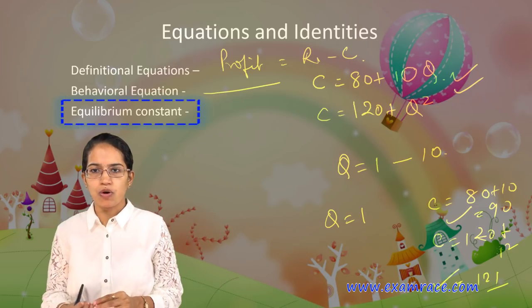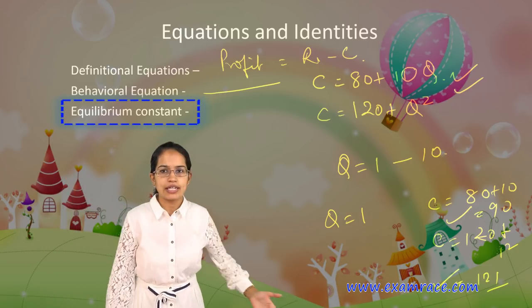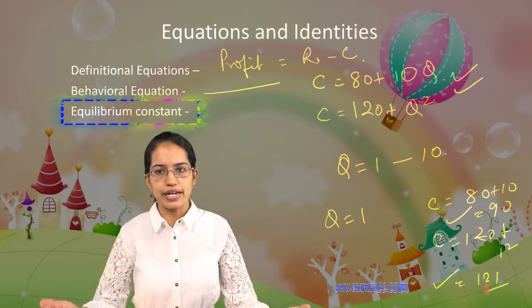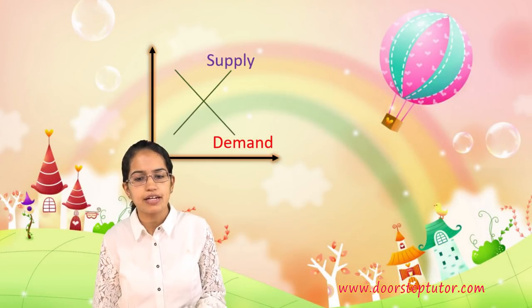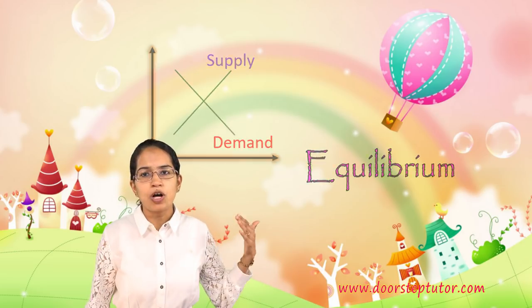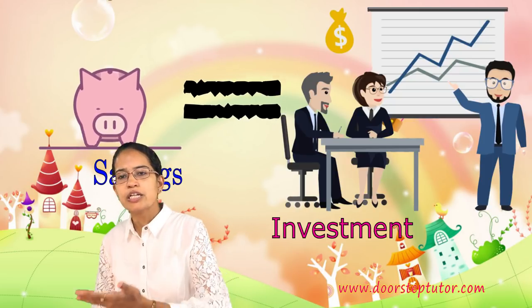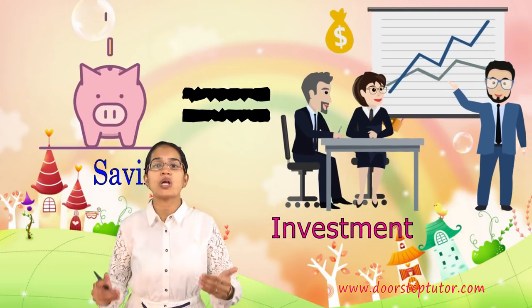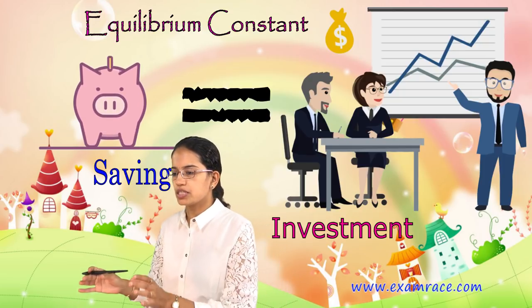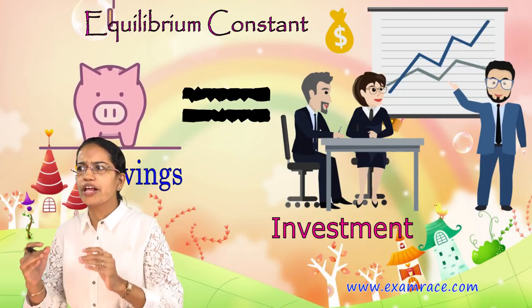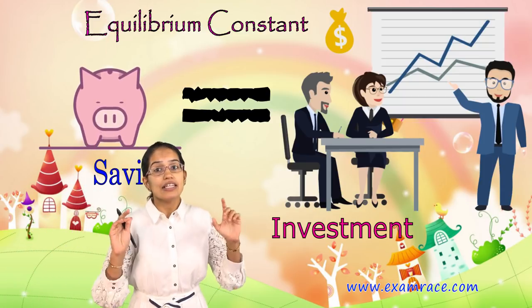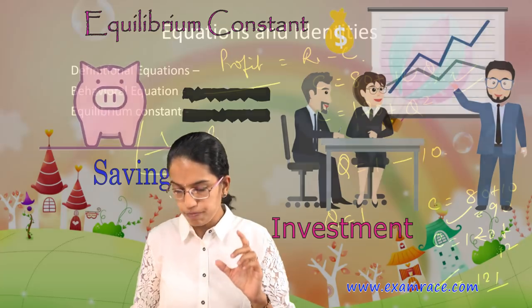The next type is the equilibrium condition. For example, quantity demanded equals quantity supplied — that is the equilibrium of the market, as shown in a demand-supply curve. Similarly, savings equals investment describes equilibrium in the national income model. A model requires a prerequisite to attain an equilibrium, and that is really important.